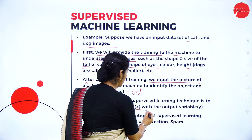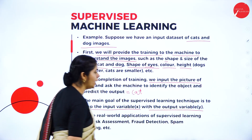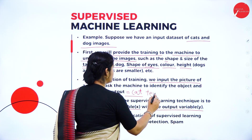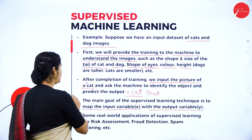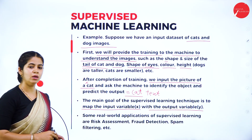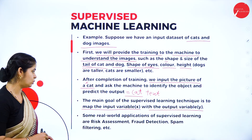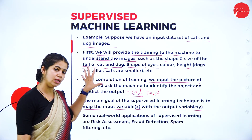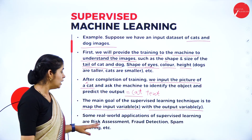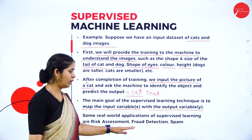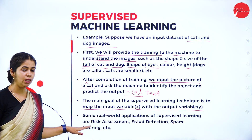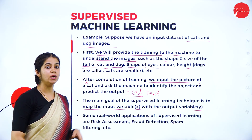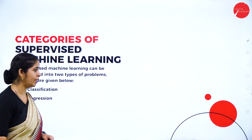The input variable X is the cat image, and the output variable Y is the text message we get for the image we give. Some real-world applications where we can use supervised learning are risk assessment, fraud detection, and spam filtering.